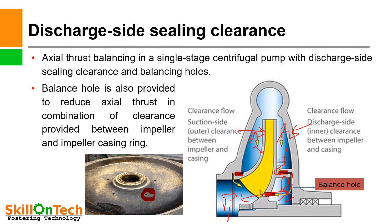Suction side wear rings are designed to limit the flow of pumpage from the higher pressure discharge side of the impeller to the lower pressure suction side. Excessive clearance of these rings can result in increased flow across the suction side and a volumetric loss of efficiency. Rear wear rings, when present, work in tandem with balance holes that pass through the suction eye to lower the suction side pressure behind the impeller and inside the rear wear ring, limiting the axial thrust force. This discharge side inner clearance between impeller and casing, provided in tandem with the balance hole, is one important method to balance axial thrust in a single stage centrifugal pump with single suction.